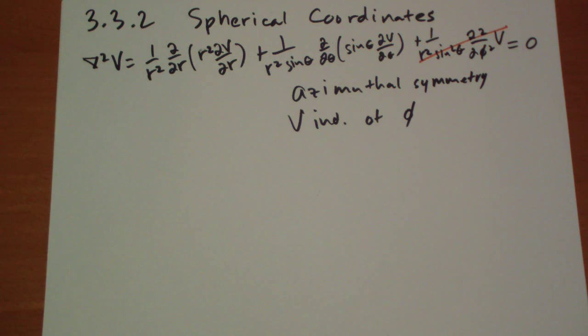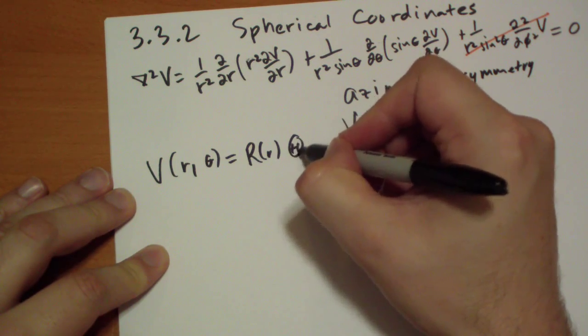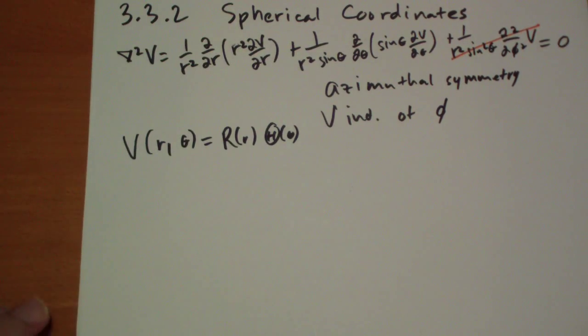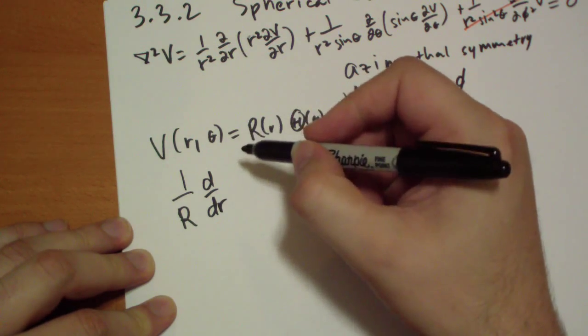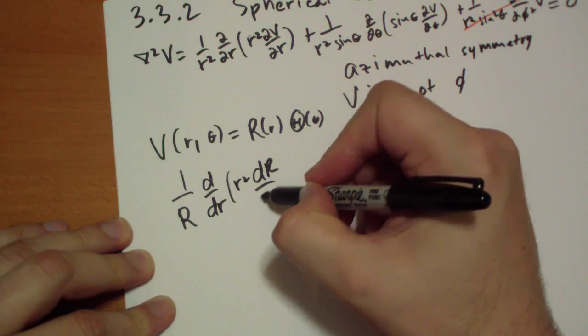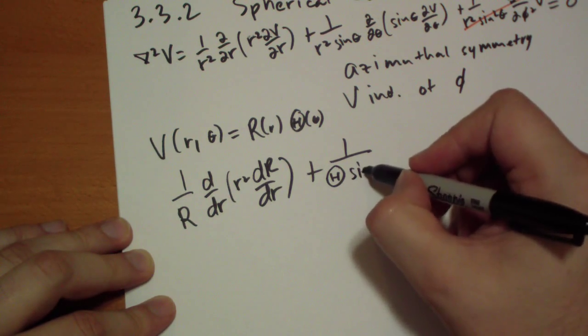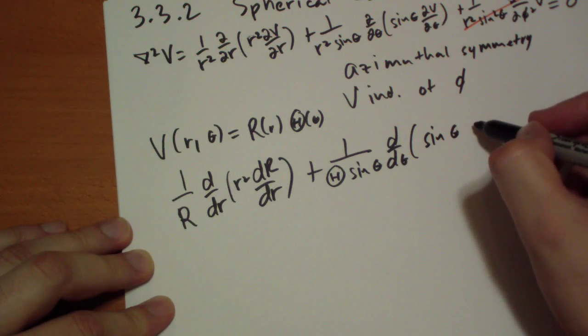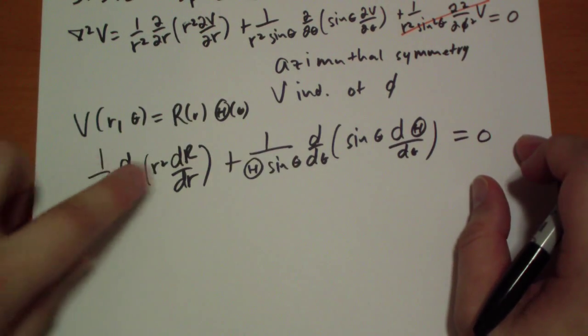And we're going to look for solutions that look like this: v of r comma theta equals capital R of r times capital theta of theta. And when we plug this in to this differential, we get 1 over r d by dr of r squared dR by dr plus 1 over capital theta sin lowercase theta d by d theta of sin theta d capital theta over d theta has to equal 0. And once again, there's only r terms here and there's only theta terms here, so these have to be constant.